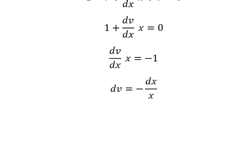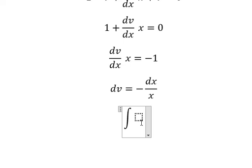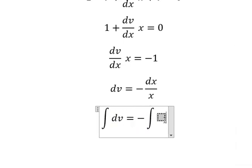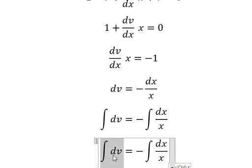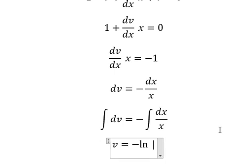Next we put the integration for both sides. The integration of v we have v. The integration of this one we have ln of the absolute value of x and I will put about C.